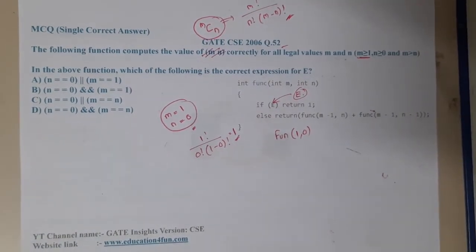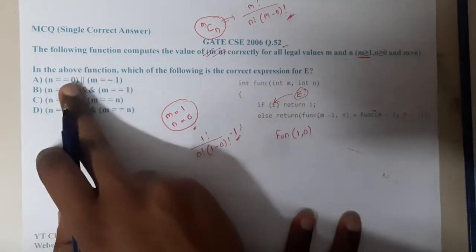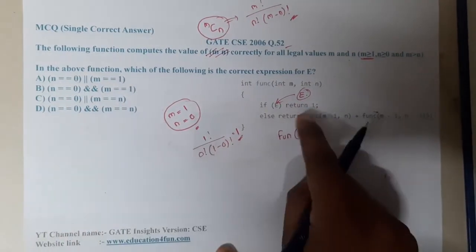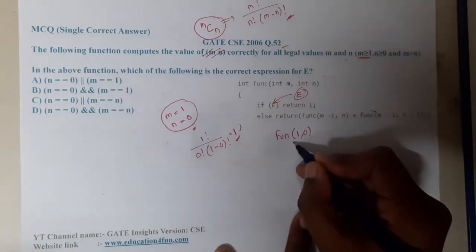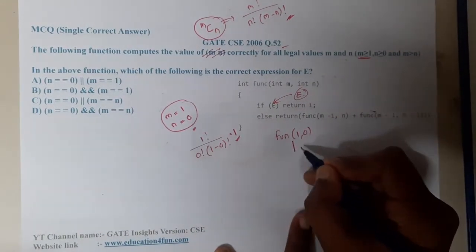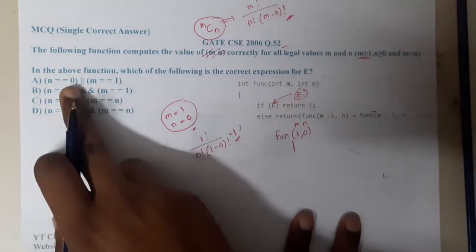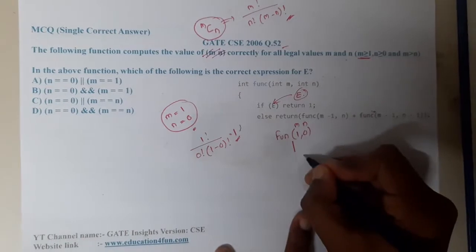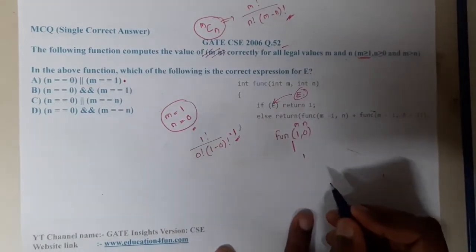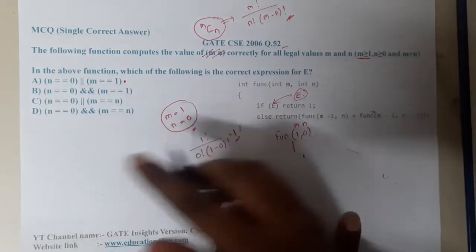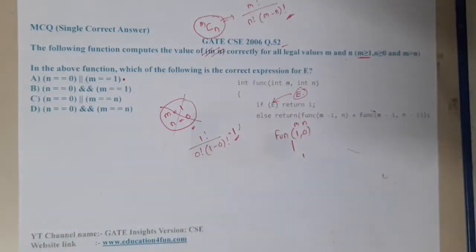Let us check the first condition: if (n == 0 || m == 1) return 1. Here n is 0, so it returns 1 — correct. However, in this example n is always 0, so it is not a good distinguishing example.